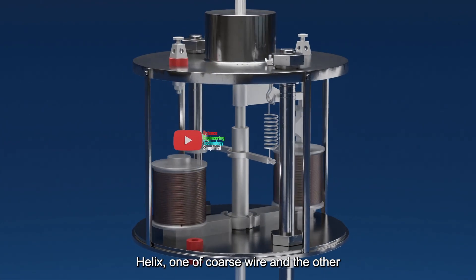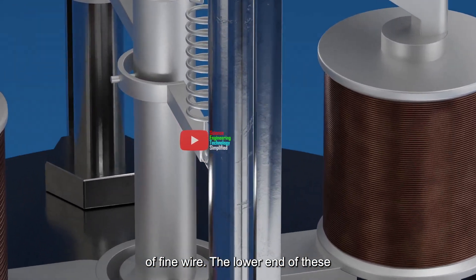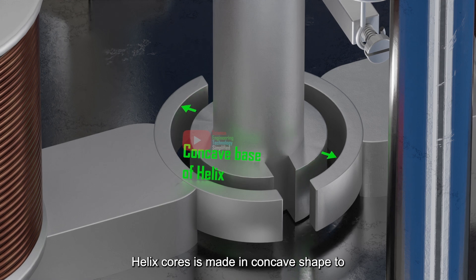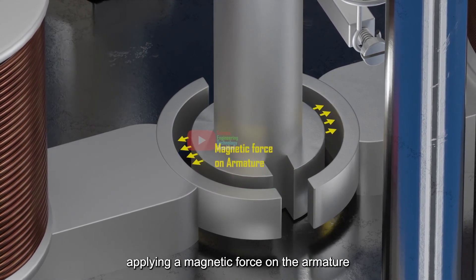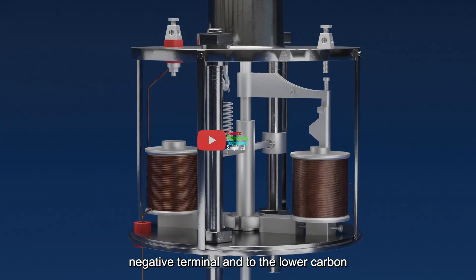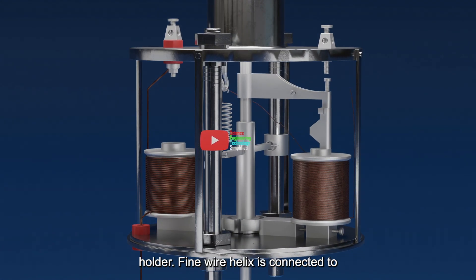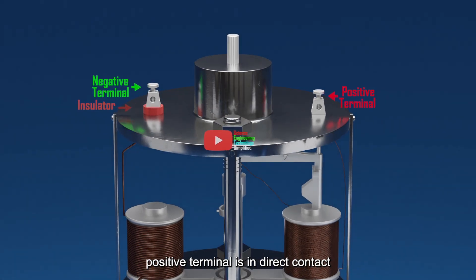Then we have two helix, one of coarse wire and the other of fine wire. The lower end of these helix cores is made in concave shape to control the sliding of the holder by applying a magnetic force on the armature of the tubular clamp. These helix are connected in the manner shown here. Coarse wire helix is connected to the negative terminal and to the lower carbon holder. Fine wire helix is connected to both the terminals only. Note, the positive terminal is in direct contact with the frame, but the negative terminal is insulated from the frame.